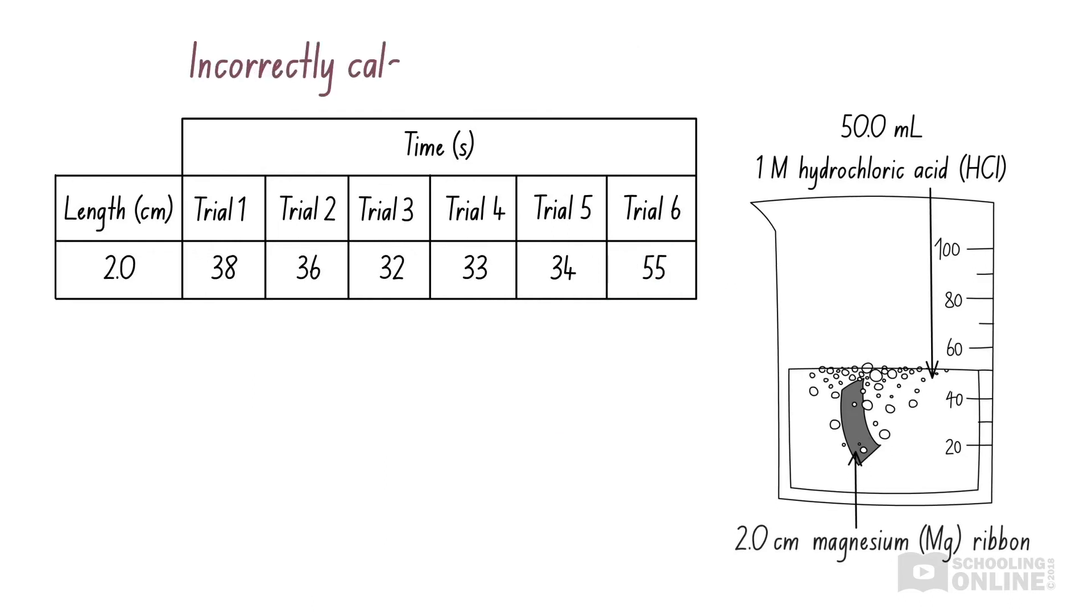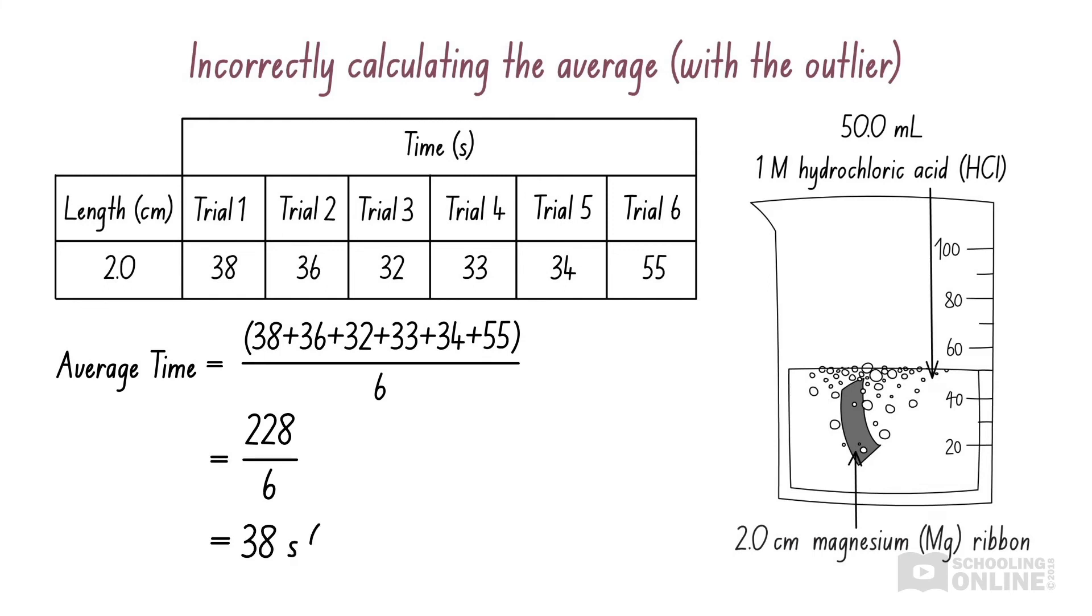Now, what would happen if we were to include the outlier when calculating the average? This would give us 38 seconds, which doesn't match up with most of the measurements that we've taken, and is too large. Therefore, it is important that we exclude outliers when calculating the average.